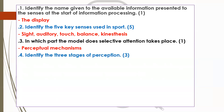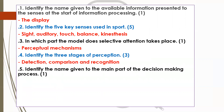Three stages of perception — this was the additional content we introduced. There are three stages of this process: detection, comparison, and recognition. You need to know what they are and what happens in each stage. The name given to the main part of the decision-making process is the translatory mechanism — that's the central box at the top of the model, the main decision-making part.